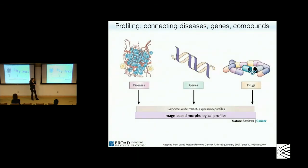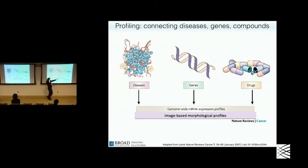Why might you want to do this? This goes back to the connectivity map paper — it allows you to connect everything: diseases to genes, genes to other genes, compounds to other compounds, and across these as well. In the connectivity map this is done through mRNA expression profiles; here we're doing it through image-based morphological profiles.